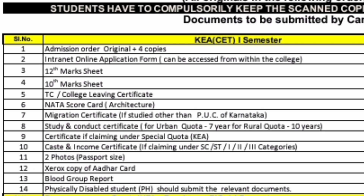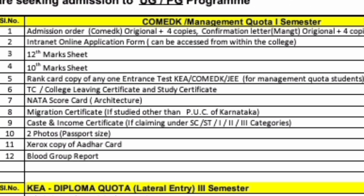So this is applicable only for the KEA CET process. Now let's talk about the documents required for COMEDK and management quota students — it's a similar set of documents. The admission order for COMEDK students and 4 copies of that, and a confirmation letter which is required for management quota students. The intranet online application form again — you don't need to bother about this; they will give you a separate application form once you reach the college, and there only you need to fill and submit it.